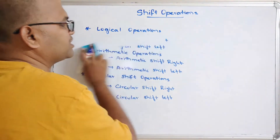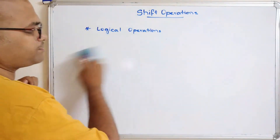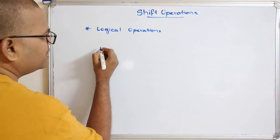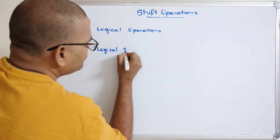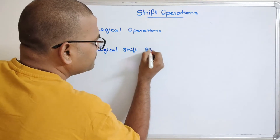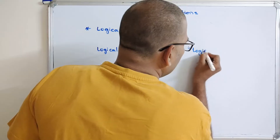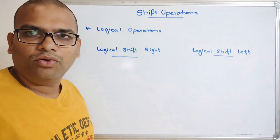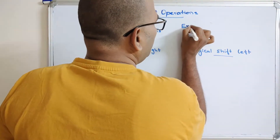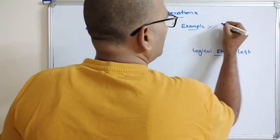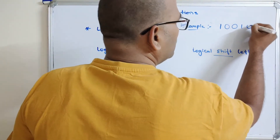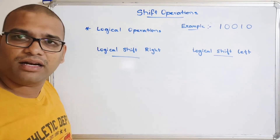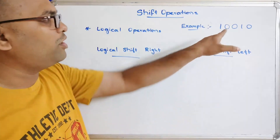Let us start with logical operations. I am taking a small example and we will see logical shift right and logical shift left. We will take a 5-bit example: 1, 0, 0, 1, 0. We will perform the logical, circular, and arithmetic shift operations — both right and left — on this example.